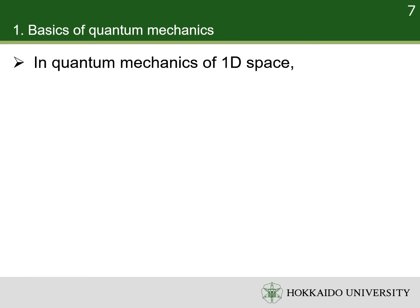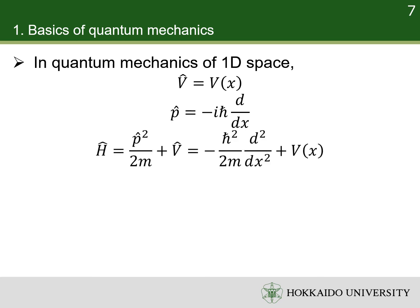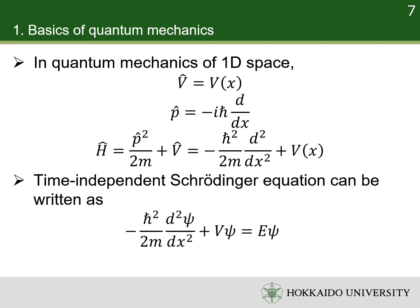In quantum mechanics of one-dimensional space, the operator for potential energy is a function of x, while the operator for momentum is a differentiation with respect to x. Combining the operators for kinetic energy and potential energy, we have the Hamiltonian in one-dimensional space. Thus, the time-independent Schrödinger equation in one-dimensional space takes such a form. It is an ordinary differential equation.